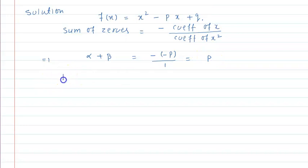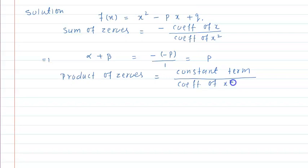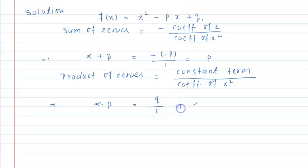अब product of zeros की बात करते हैं. Product of zeros = constant term upon coefficient of x². So alpha × beta = q/1, which implies alpha × beta = q.